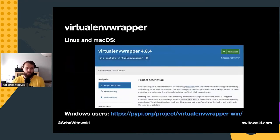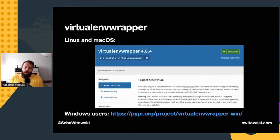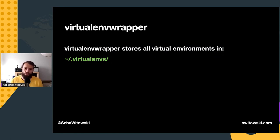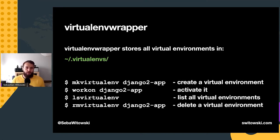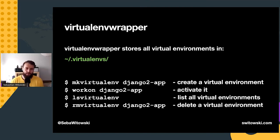The venv module is perfectly fine for managing virtual environments, but I want to show you another tool called virtualenvwrapper that I've been using for a long time. It comes with a lot of cool features that make working with virtual environments much easier. You can install it with pip — it works on macOS and Linux, and there's a virtualenvwrapper-win for Windows users. Virtualenvwrapper stores all virtual environments inside the `.virtualenvs` folder in your home directory. You create a new virtual environment using `mkvirtualenv` — for example, `mkvirtualenv django3app` will create it in your home directory's `.virtualenvs` folder.